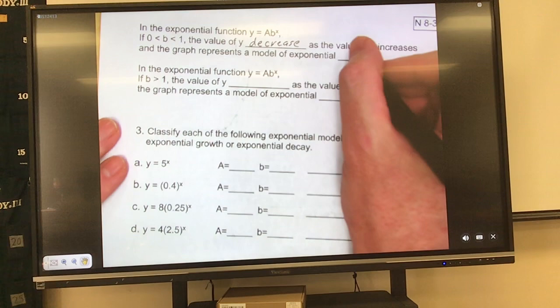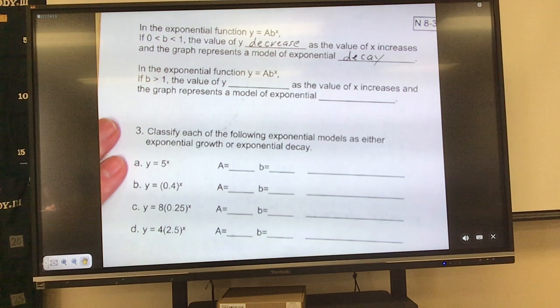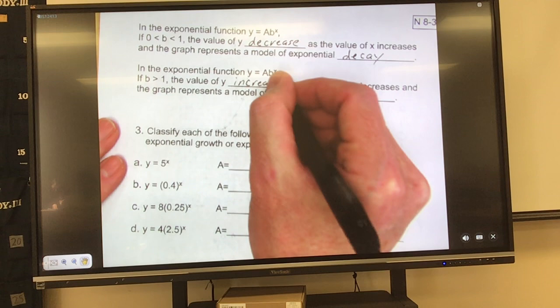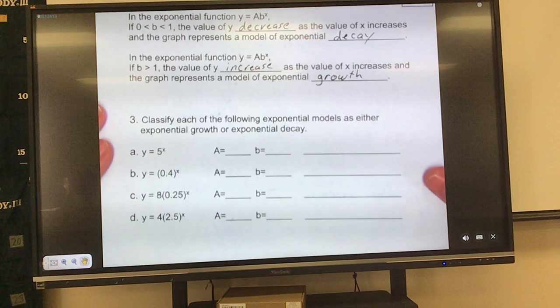So if the number that is attached to the exponent of x is less than 1, then it's decay. If that number touching the x, my b is greater than 1, then the y will increase as the value of x increases. The graph represents exponential growth. So let's take a look at these guys.